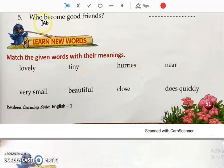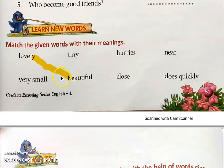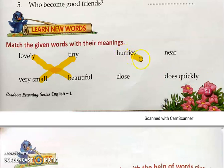Now, learn new words. We have to match the given words with their meanings. 'Lovely' means beautiful. 'Tiny' means very small. 'Hurries' means to do something quickly. 'Near' means close — nazdik. So match these words with their meanings.